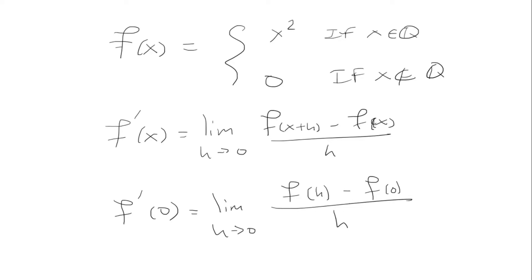Here we have to consider two cases. Well, first, if we look at f of 0, it's going to be 0 if it's not rational. And it's also going to be 0 if it's rational, because if I plug in 0 for x squared, I get 0. So this is just 0.